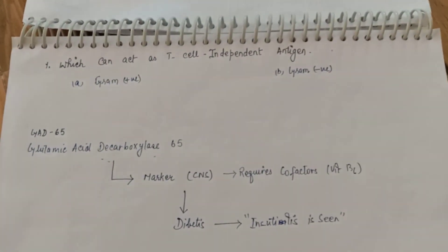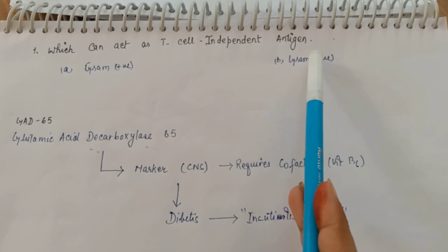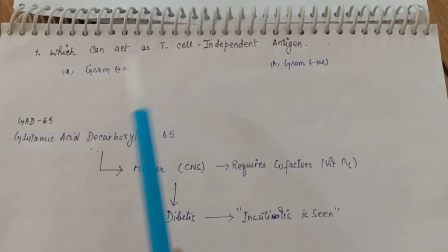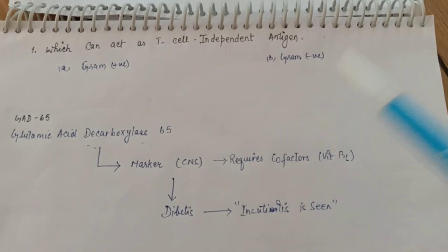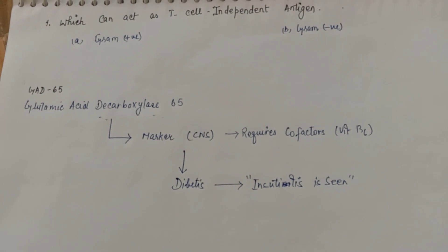You have one question here: which can act as T cell-independent antigen? The options are gram-positive bacteria, second is gram-negative bacteria. Do comment in the comment section below.